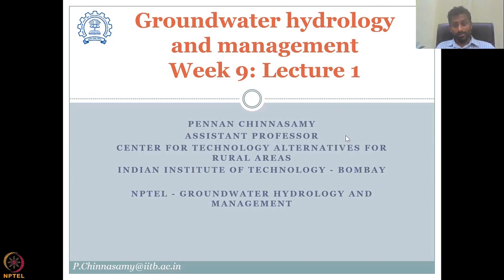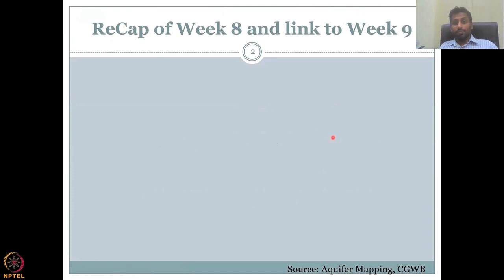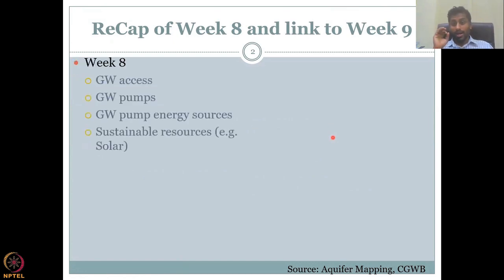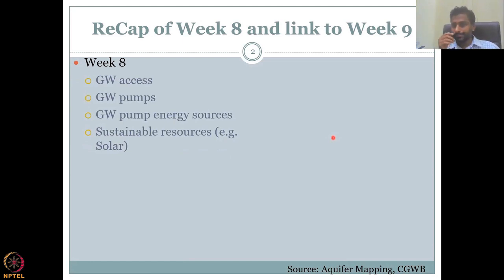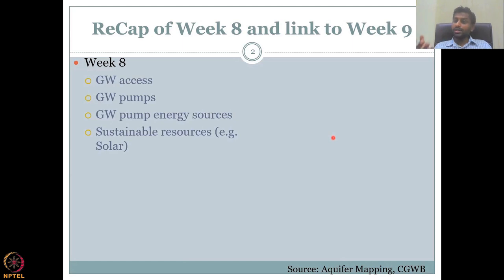What will we be doing this week? Let's do a recap of Week 8 and how it's linked to Week 9. In Week 8, we looked at groundwater access as a problem — how groundwater is being accessed. Everyone knows by now that India is the key groundwater extractor in the world, extracting about 245 to 265 cubic kilometers of water annually, and there is tremendous stress on the aquifer. The water is accessed through groundwater pumps, through wells — dug wells, driven wells, or drilled wells.